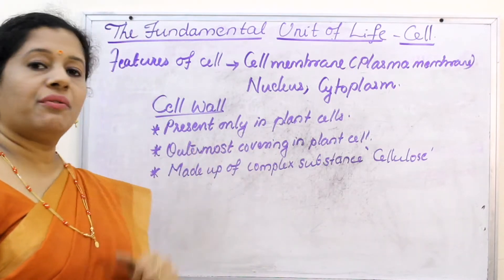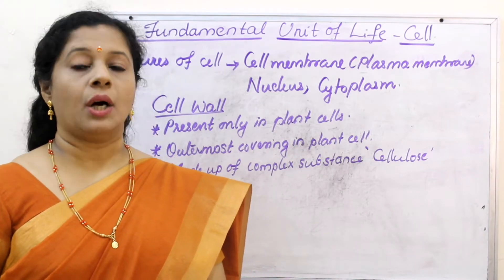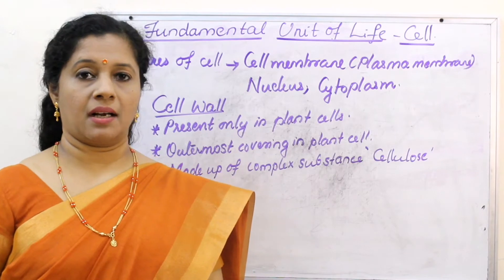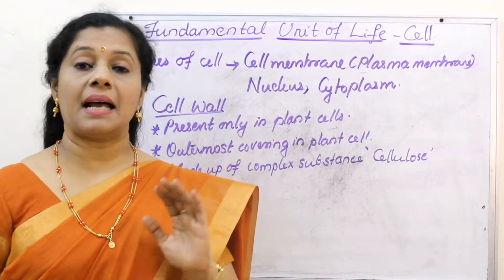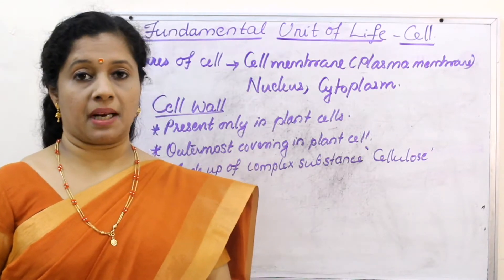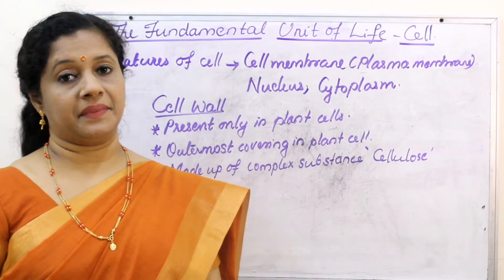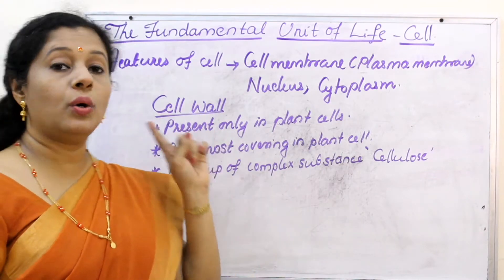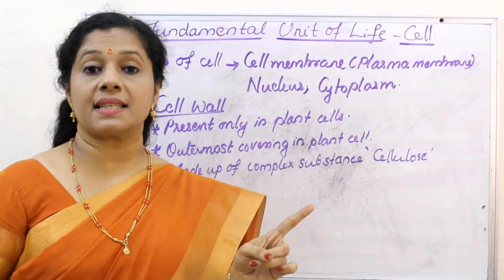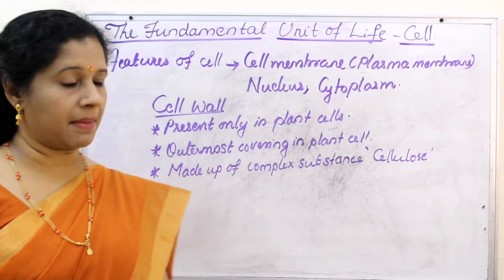Where do you find cell wall? Cell wall is found only in plant cells. We know a cell has an outer covering called a plasma membrane — that is for both animal cell and plant cell. But in plant cells, in addition to the plasma membrane, there is one more covering called a cell wall. So cell wall is present only in plant cells. The outermost covering in a plant cell is the cell wall, while the outermost covering in an animal cell is the cell membrane or plasma membrane.